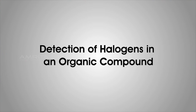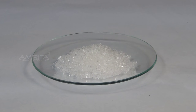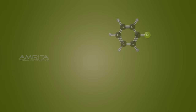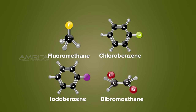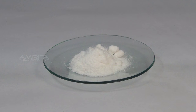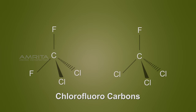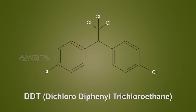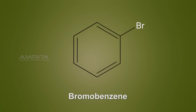Detection of Halogens in an Organic Compound. There are many organic compounds containing halogens such as fluorine, chlorine, bromine and iodine. They are called organohalogen compounds. Some commonly known examples are carbon tetrachloride, chlorofluorocarbons, DDT, iodomethane and bromobenzene.